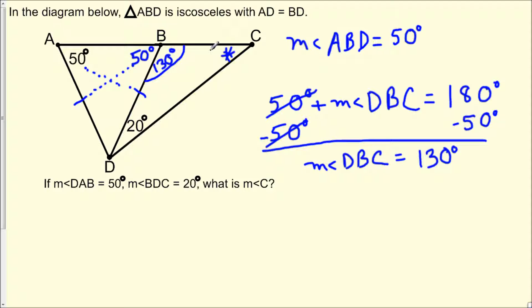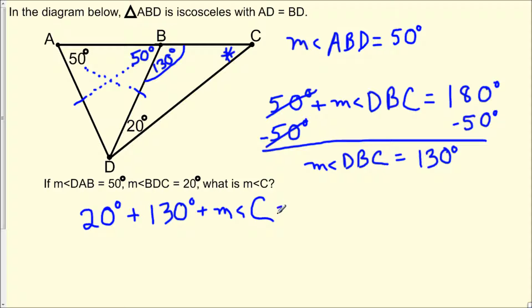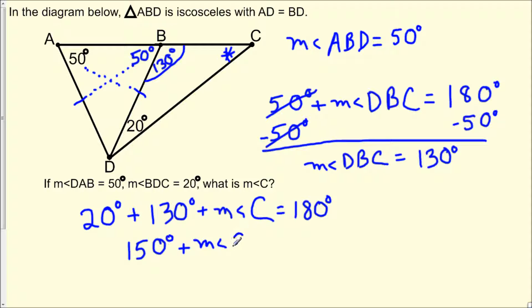To find the measure of angle C, we use the theorem which states that the sum of the measures of the interior angles of a triangle is 180 degrees. In triangle DBC, we have the measures of two angles: 20 degrees and 130 degrees. So we write: 20 degrees plus 130 degrees plus the measure of angle C equals 180 degrees. Simplifying, 20 degrees plus 130 degrees is 150 degrees, so 150 degrees plus the measure of angle C equals 180 degrees.